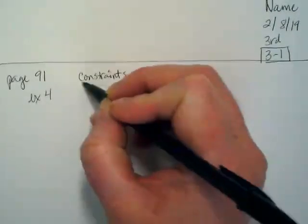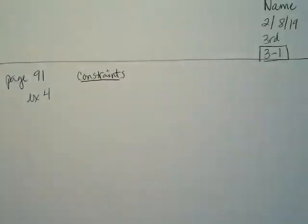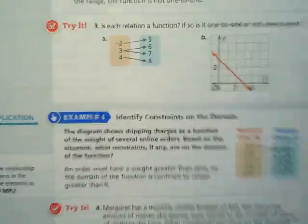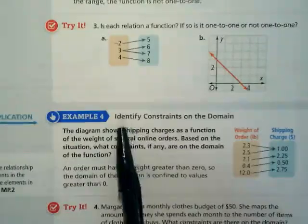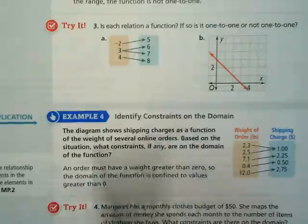When I look at example 4, it talks about constraints. And to me, that's just a vocabulary term that when I explain what it means, you guys are going to be like, oh, that totally makes sense. I want you to look at the problem on the bottom of page 91 in your book, where it's titled Identify Constraints on the Domain.